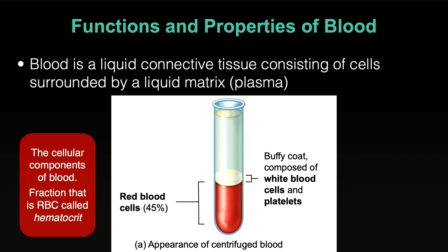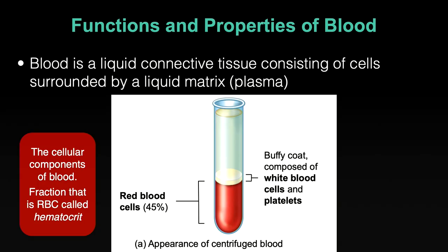Together, the cellular components are called what the book refers to as formed elements — things that can be spun out. We will focus mostly on red blood cells, as those are the important units in gas exchange. The other elements don't play a large role in gas exchange. Red blood cells are the most important elements in gas exchange.